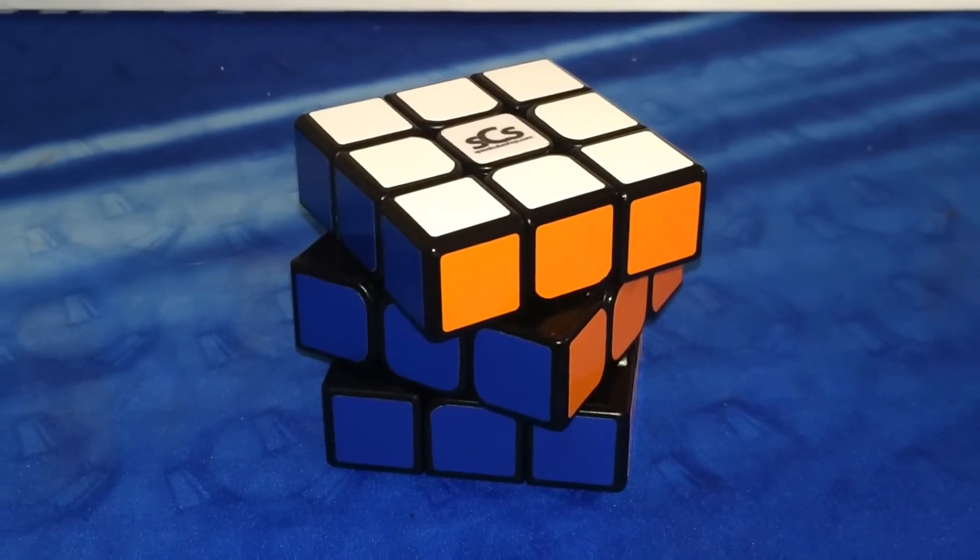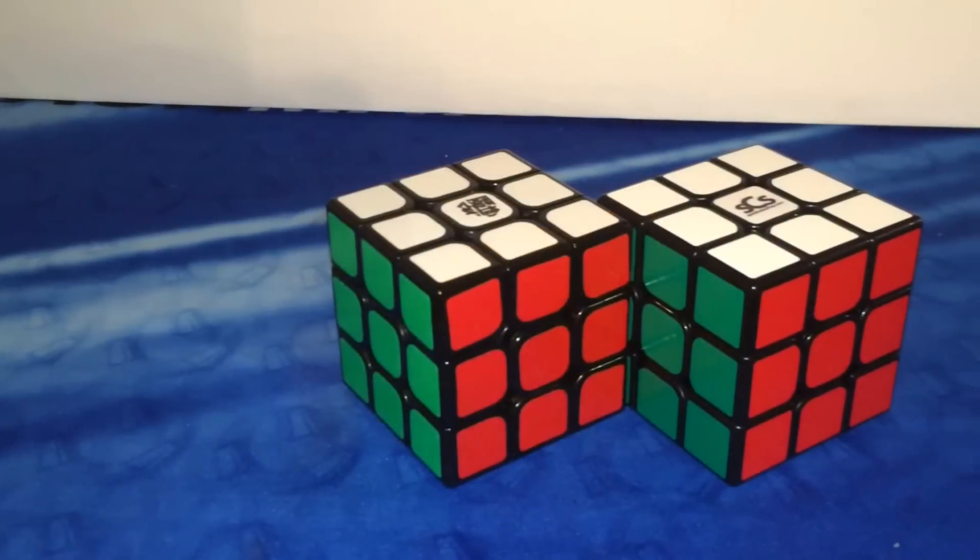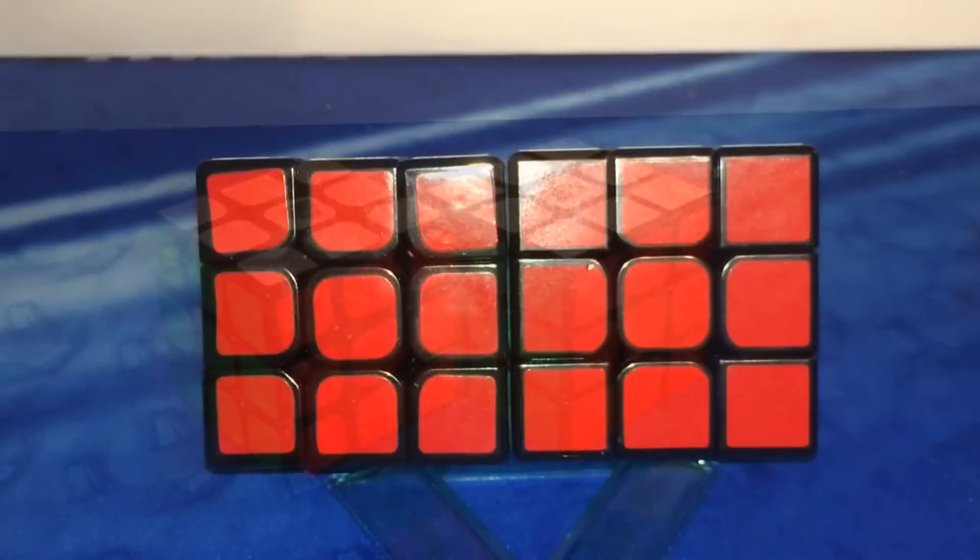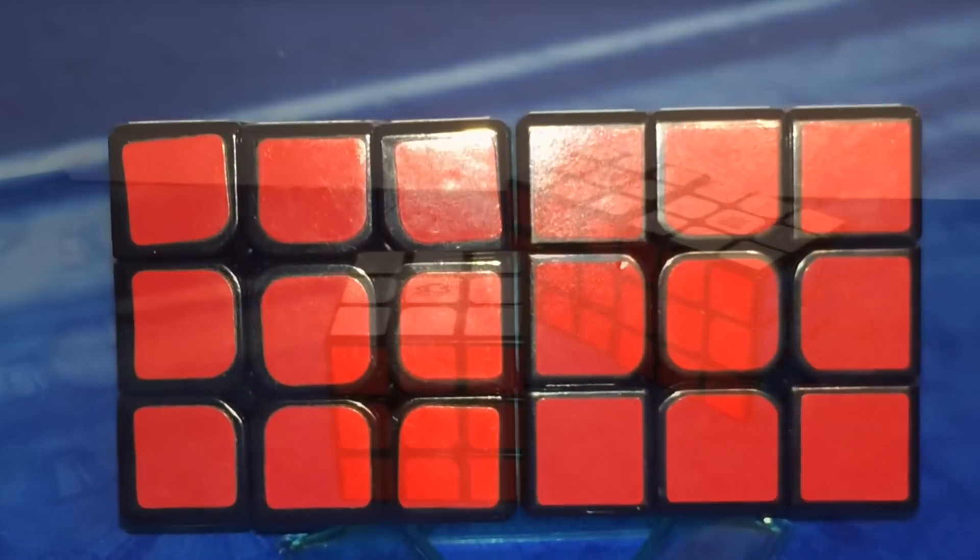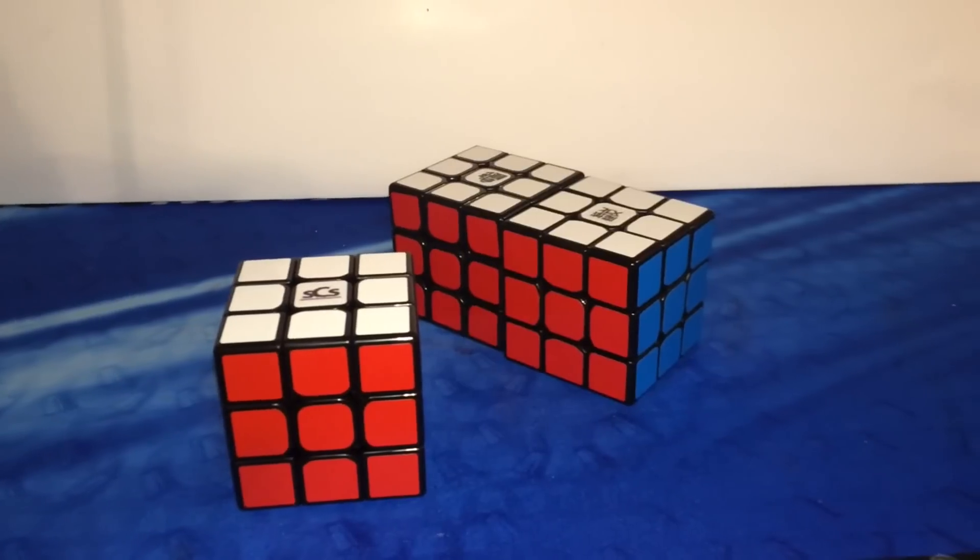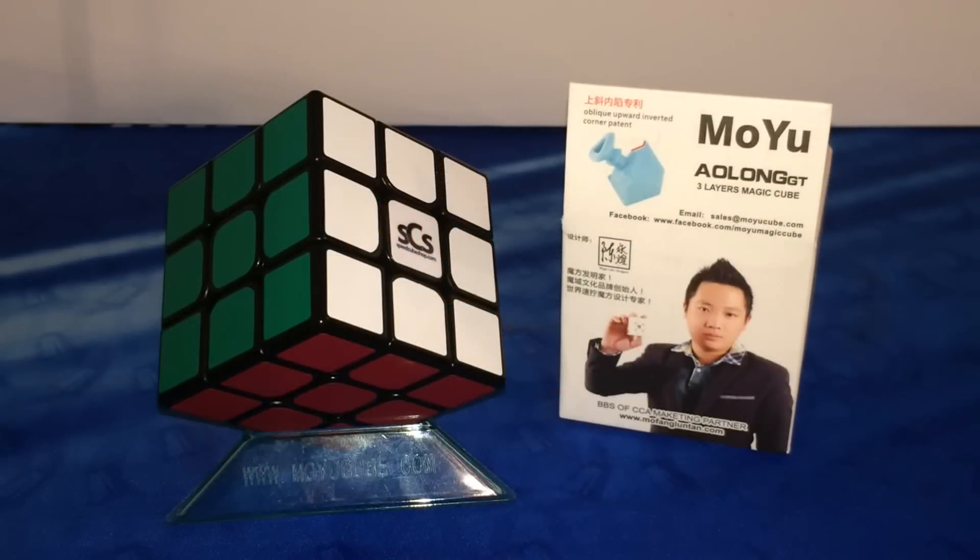The Moyu Aolong GT is the third version of the Moyu Aolong. Coming after its brother, the Moyu Aolong version 2, these puzzles have very similar mechanisms but the GT has squared off corners. It also has a lot of resemblance with the Tang Long. So let's see how this puzzle compares against the other Moyu puzzles.